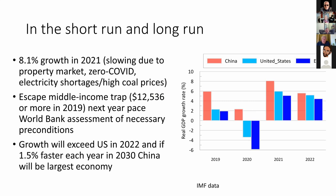As for the present situation, China grew at 8.1% last year. Its growth actually slowed in the last quarter due to property market reform, its zero-COVID policy, electricity shortages and high coal prices. But the forecast suggests that China's growth in the next year or so will be well ahead of that of the United States, and that it will quite conceivably escape the middle-income trap, even though the World Bank has argued that certain reforms necessary to escape that trap are ones China has simply not implemented — and in many respects has moved in the opposite direction. But basically, if growth in China exceeds that of the United States by about 1.5% per year, then by 2030 China will certainly be the largest economy in the world.